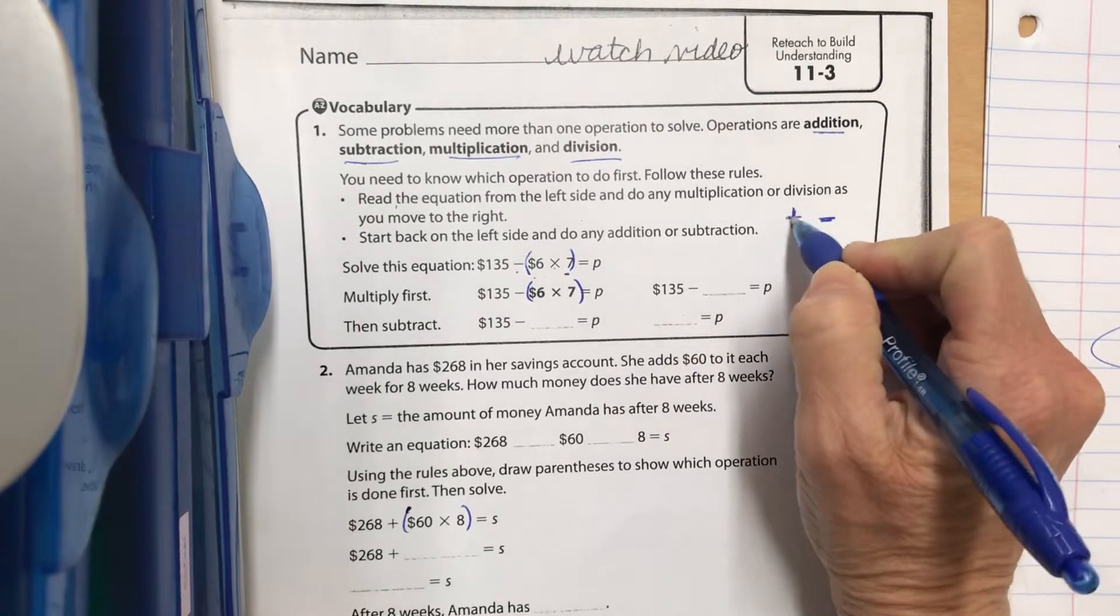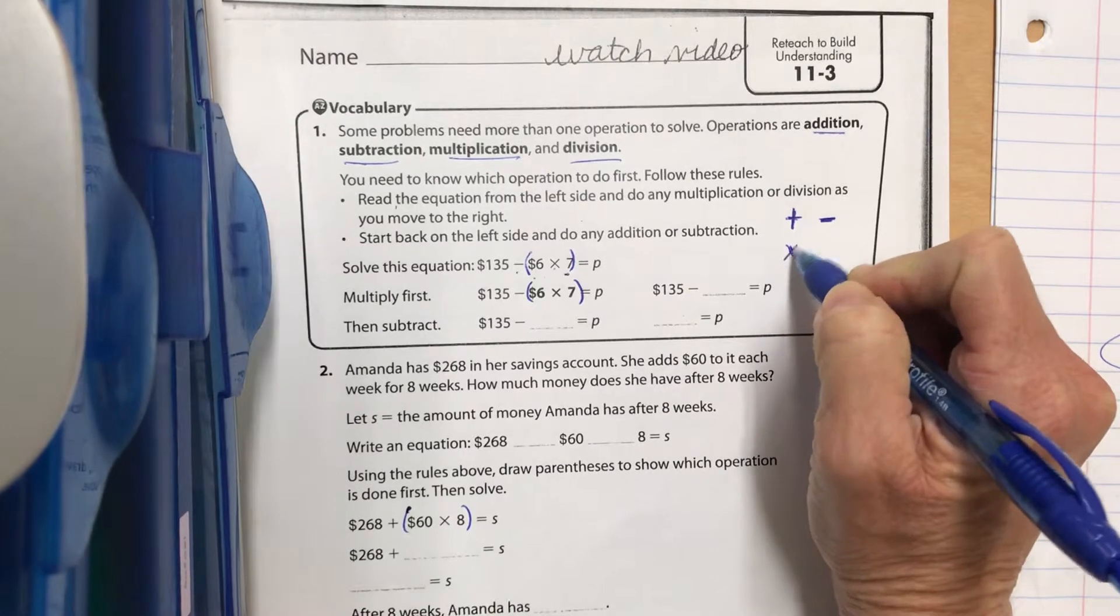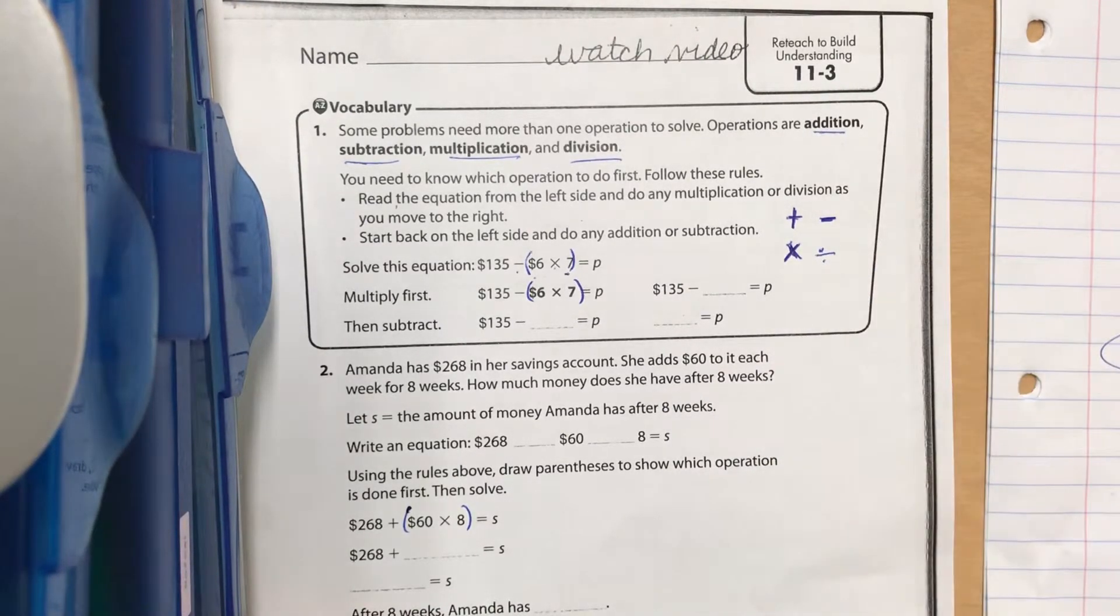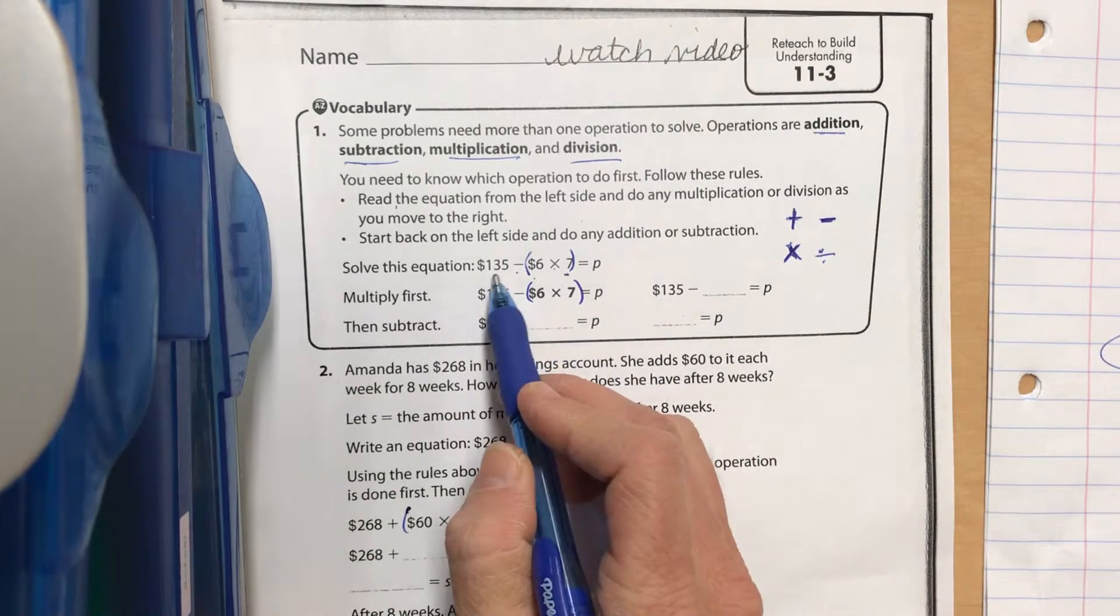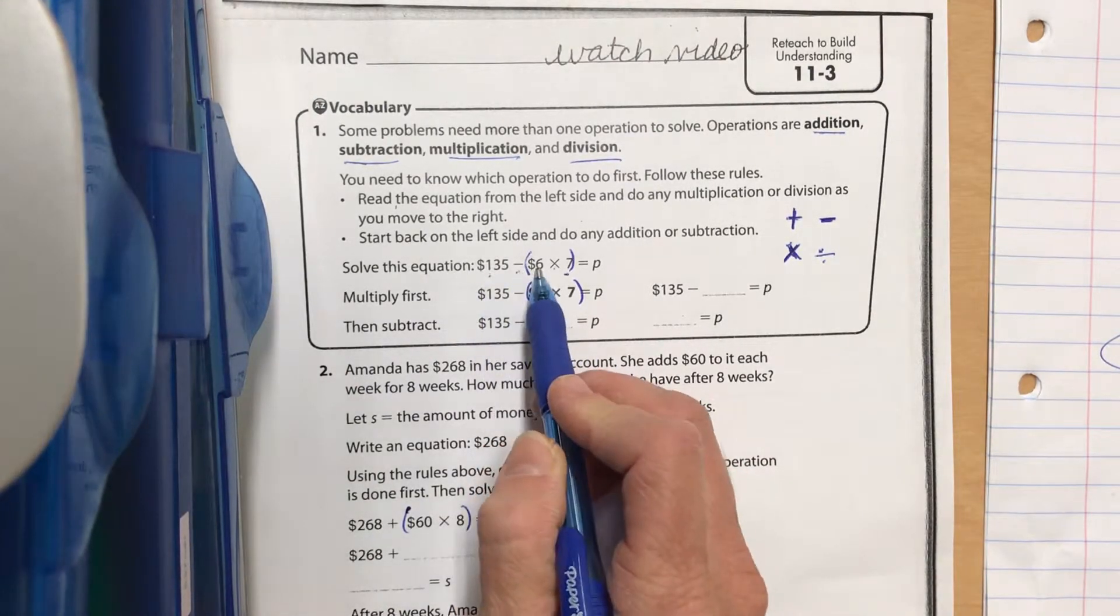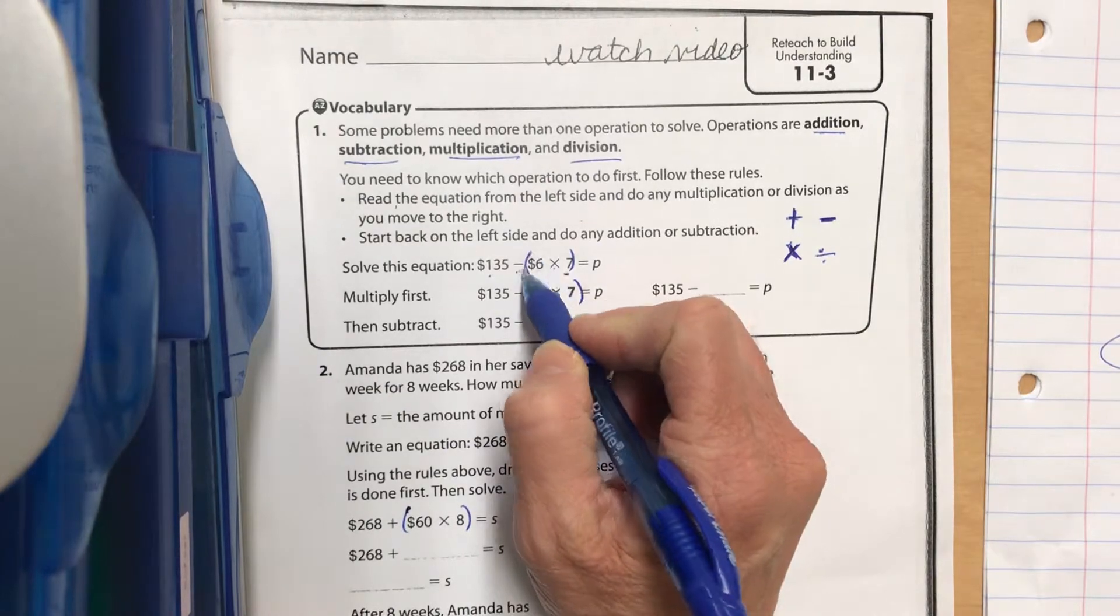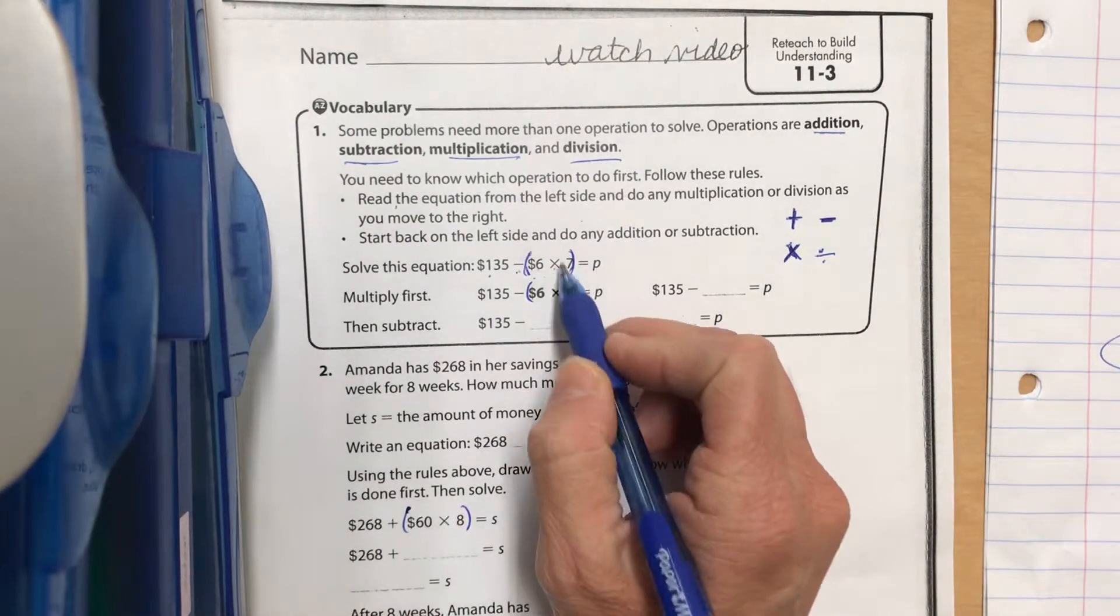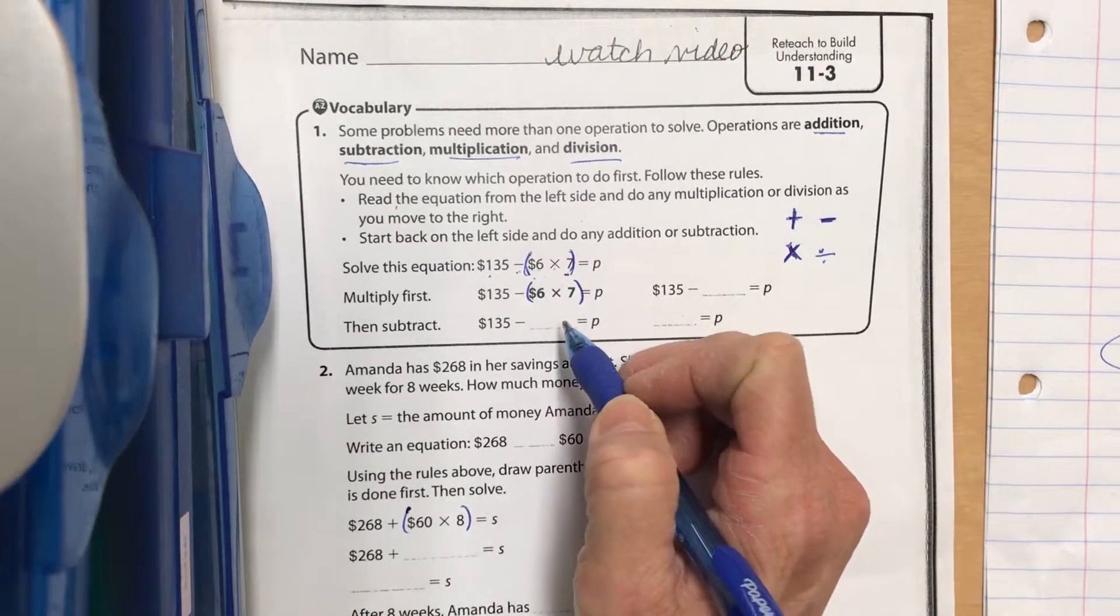In this problem, we have 135 minus six times seven. I went ahead and put parentheses around it. We always know we do what's in parentheses first, but we always do the multiplication or the division problem first.